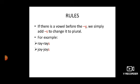If there is a vowel before Y, we simply add S to change it to plural. For example, ray. The word ray, before Y, there is a vowel that is A. So that is why we just have to add S at the last. Rays. It becomes rays. Joy become joys.